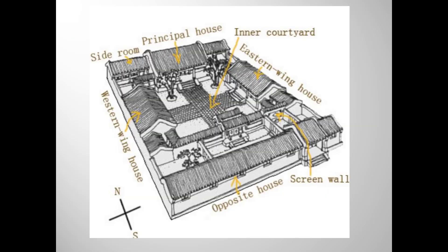Let me make a couple more points about the way the Forbidden City was laid out and constructed. Here you see the plan of a traditional multi-generational family compound in Beijing. Note that it, too, is organized on a north-south axis. The head of the family lives in the principal house on the north, and the other families are assigned houses strictly according to rank. So the Confucian hierarchy determines the layout of both Chinese domestic and imperial spaces.